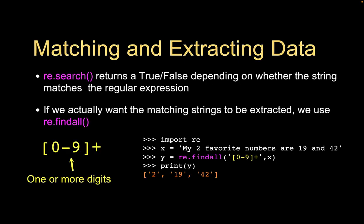Sometimes we not only want to know whether a line is interesting, but also want to extract data from the text. Instead of re.search(), we use re.findall(). The slide says re.search() returns true/false depending on whether the string matches the regular expression — that's loosely true. It's used in an if test, so if it's true we print the line. But it actually returns either a match object or None, both of which support truth value testing.